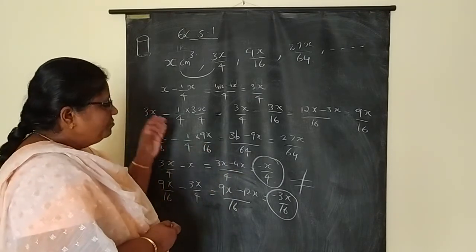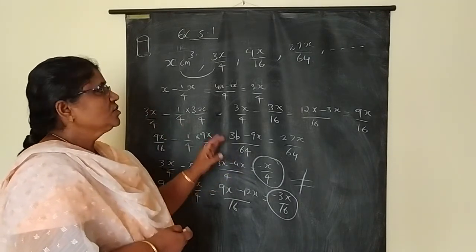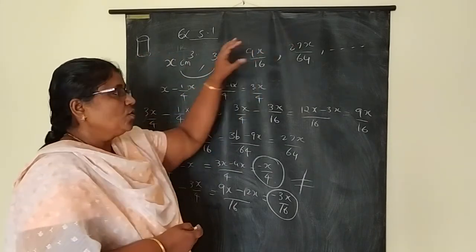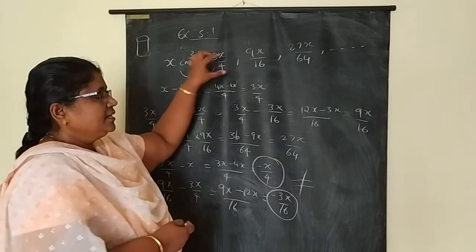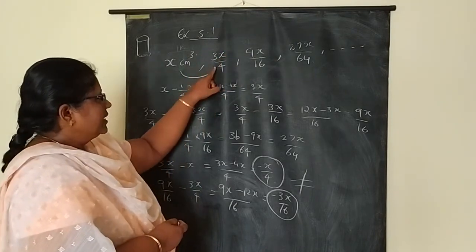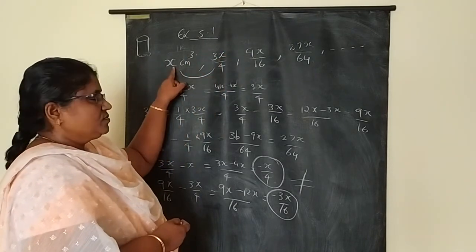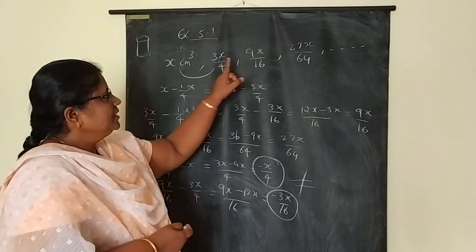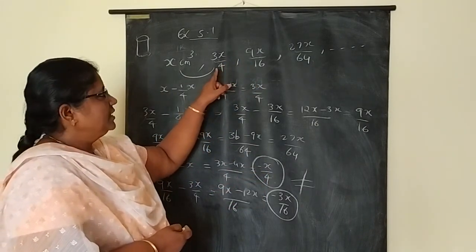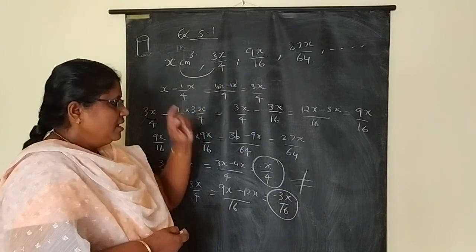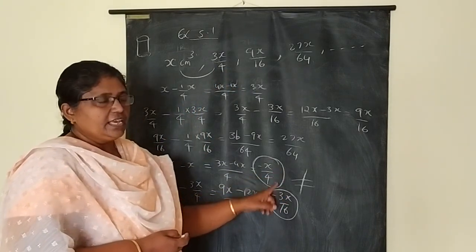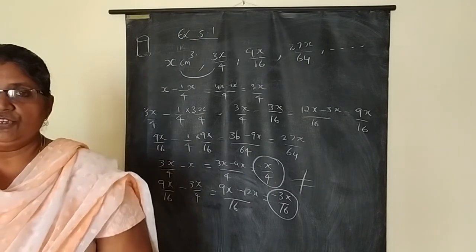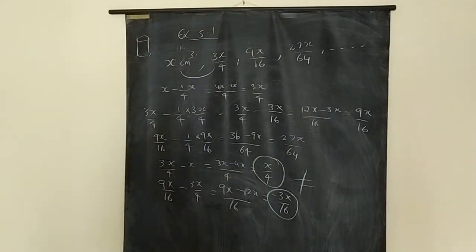So if you get a question like this, write the terms according to the question. Then find second term minus first term, and third term minus second term. If both differences are equal, it is an AP; otherwise, it is not an AP.